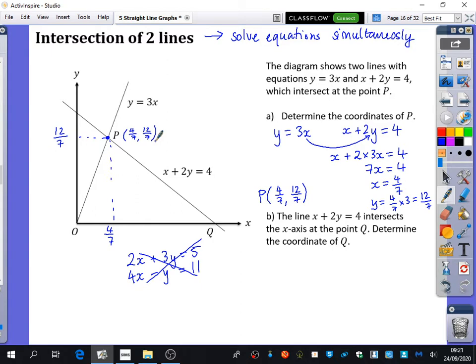Part B says the line x plus 2y equals 4 intersects the x-axis at point Q. Determine the coordinates of Q. If it's intersecting the x-axis, what does that mean? Y is equal to zero. We know y equals zero. We're talking about this bit here. Clearly, the y coordinate is zero because it's not going up or down at all. So y equals zero, and we have x plus 2y equals 4. What's x equal to? 4, because y is zero. So the coordinates Q are 4 for x and 0 for y. I could put that on here - that's 4, 0, and the x coordinate is 4.